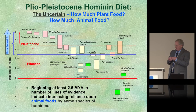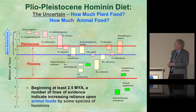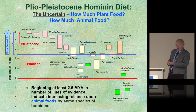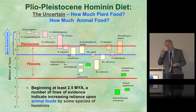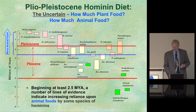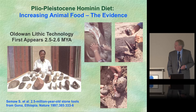The uncertain part of the diet is how much plant versus animal food was consumed. Starting around two and a half million years ago, coincident with the evolution of our genus Homo, there is evidence we began eating more and more meat — probably one of the key factors that allowed a large, metabolically active brain to evolve.